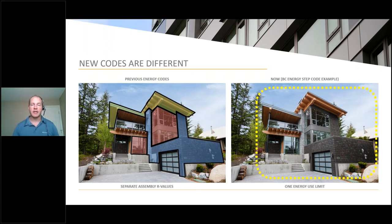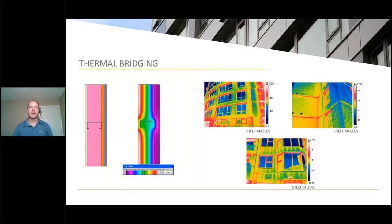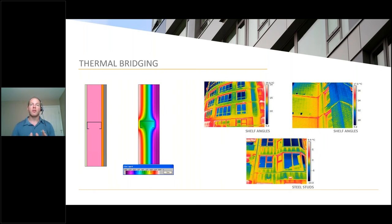That focus on getting the building enclosure performing correctly directs us not only to the assemblies themselves, but to a detailed level of how they interact. When we look at cladding assemblies and exterior insulated layers, we look at what non-insulation things exist within the insulation layer — whether it's a stud, a girt, or a bracket. Those things are not insulation and will cause increased heat loss due to their higher conductivity. Whether they're metal or not, if they cause heat to flow faster than insulation, they contribute to thermal bridging, and our objective is to minimize it.